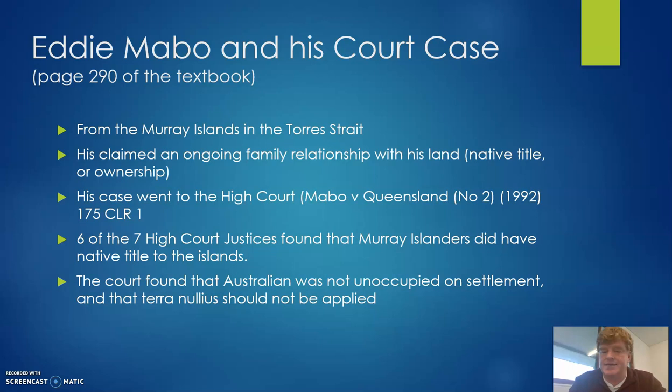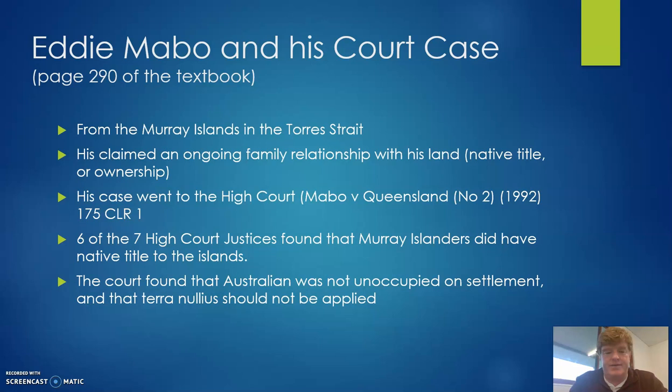This brings us many years forward into the 80s and 90s and Eddie Mabo and his court case. Eddie Mabo is an Indigenous man from the Murray Islands and the Torres Strait who found himself working at James Cook University in Townsville. As he talked to academics about his situation, he claimed that his family had had a significant ongoing relationship with the land on the island he came from. He wanted to test this in a legal case. His case did go through the Supreme Court of Queensland and then went to the High Court.